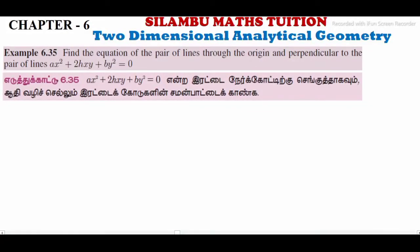Hi student, this is Silambu Max tuition 11th standard example 6.35. Find the equation of the pair of lines through the origin and perpendicular to the pair of lines ax² plus 2hxy plus by² is equal to 0. The given equation is ax² plus 2hxy plus by² is equal to 0.